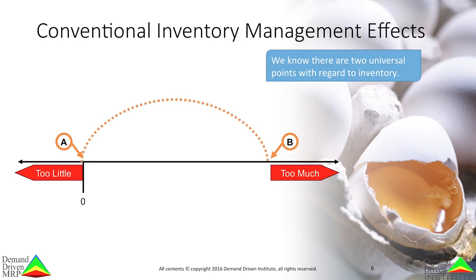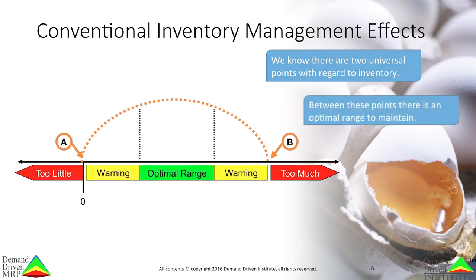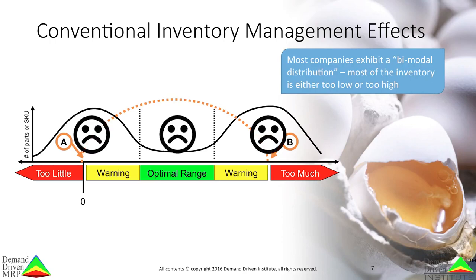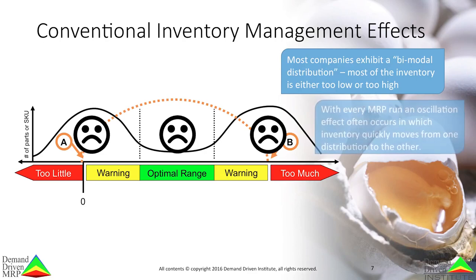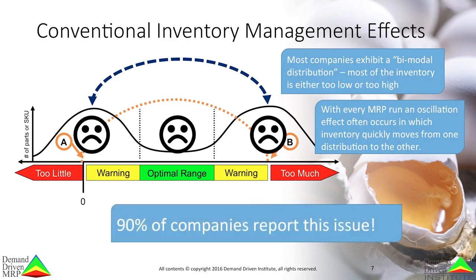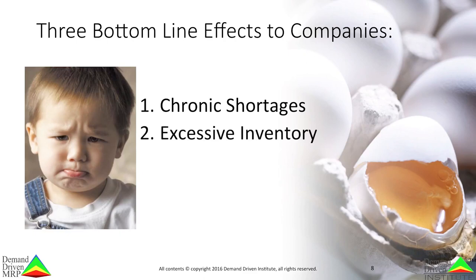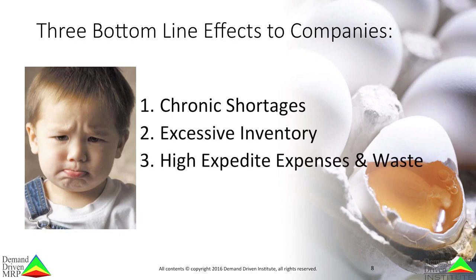If we know these two points exist, then we also know that somewhere between the points there must be an optimal range — a level that is needed to protect flow without being excess. Yet most companies exhibit what is known as bimodal distribution. Most of the inventory is either in the too-low or too-high range. Very little is within the optimal range. Worse yet, every MRP run typically results in an oscillation which shifts parts from one extreme to the other. 90% of companies using MRP report this issue. This bimodal distribution is devastating to the bottom line.